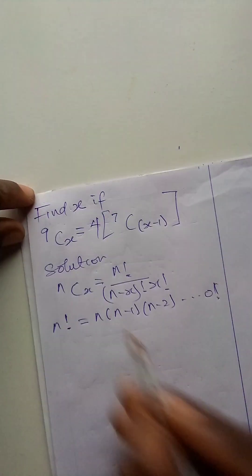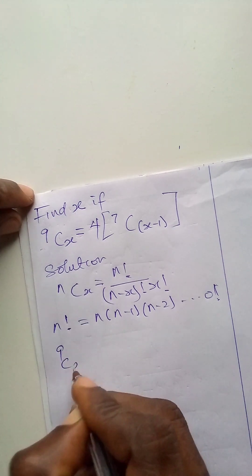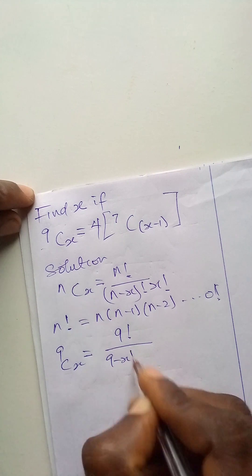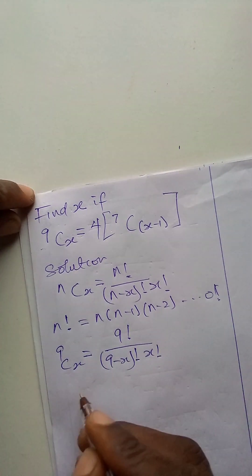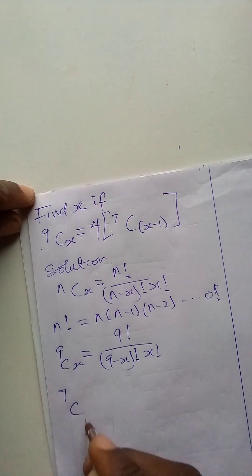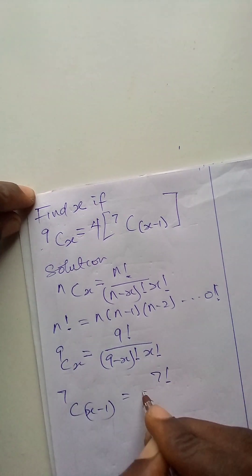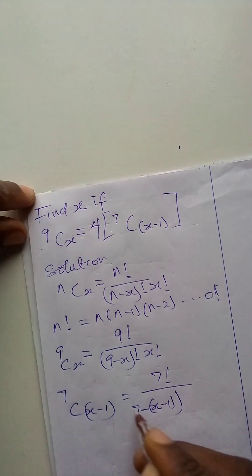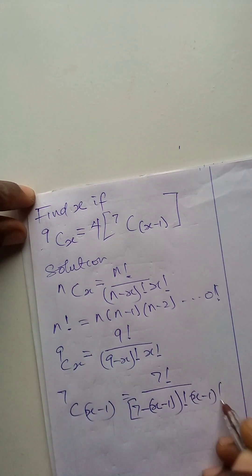Let us now apply this in the question. First, 9 combination x is 9 factorial over 9 minus x factorial times x factorial. And 7 combination x minus 1 will be 7 factorial over 7 minus (x minus 1) factorial times x minus 1 factorial.